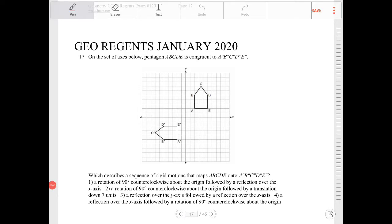On the set of axes below, Pentagon ABCDE is congruent to A double prime, B double prime, C double prime, D double prime, and E double prime.